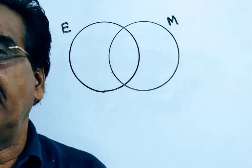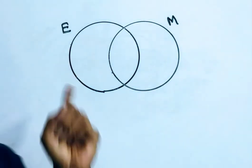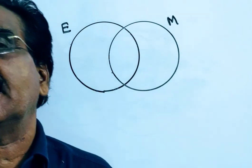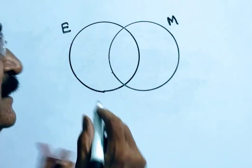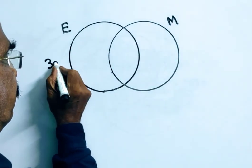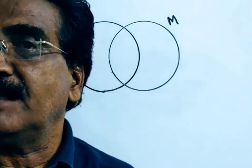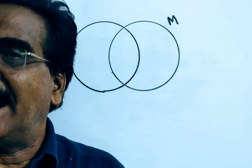In an examination, 70% of the candidates passed in English. 70% passed means 30% failed. And 80% of the candidates passed in math.